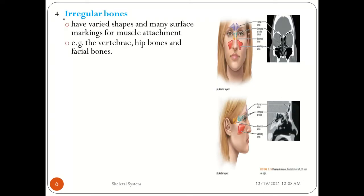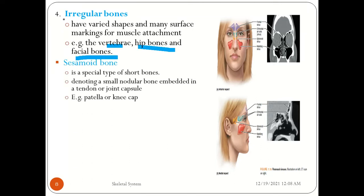Irregular bones have varied shapes with many surface markings for muscle attachment. Examples include the vertebrae, hip bones, and facial bones, all of which are grouped under irregular bones.